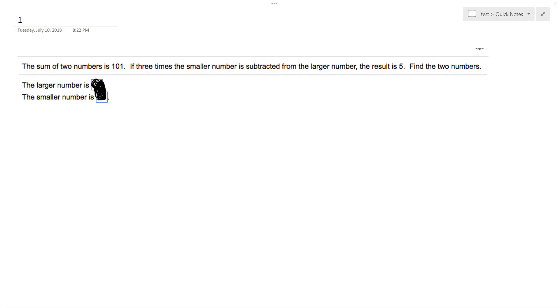Alright, so we have the sum of two numbers is 101. If three times the smaller number is subtracted from the larger number, the result is 5. So we want to find what these two numbers are.